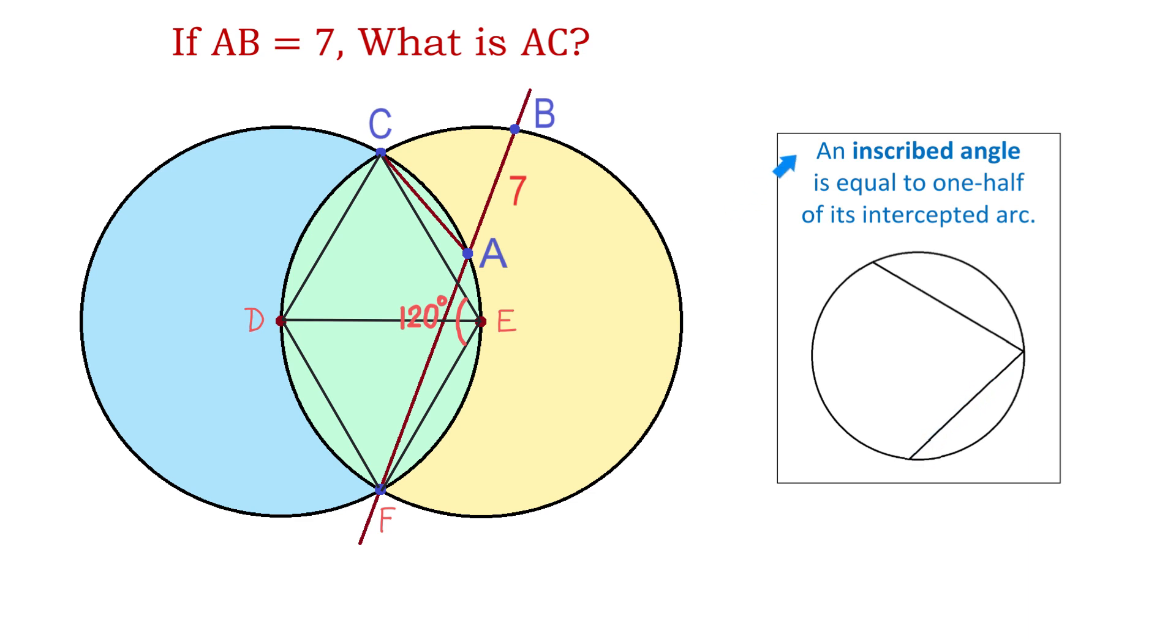Now, this principle tells us that an inscribed angle is equal to one half of its intercepted arc. So, in this figure, this is the intercepted arc, and let's say that this intercepted arc measures 140 degrees. Then the inscribed angle will be half of 140, which is 70 degrees.